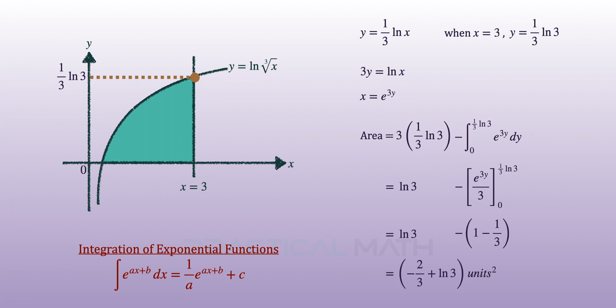By simplifying further, we will get the required area of negative two-thirds plus ln 3 unit square in its exact form. And that's the answer for this question.